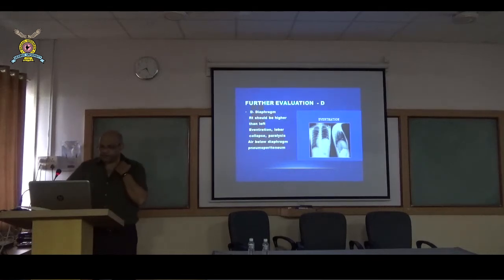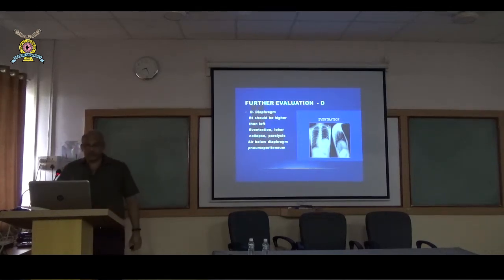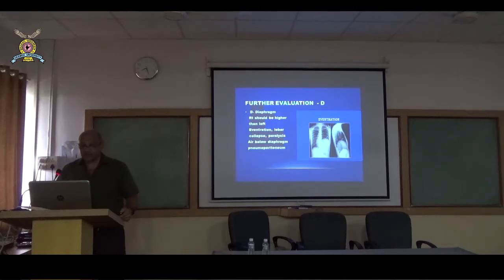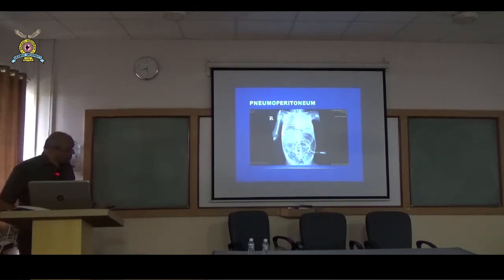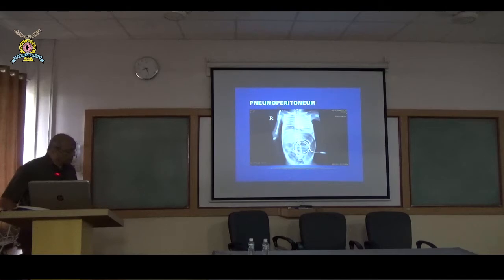Let's go to D — the domes of the diaphragm. The right dome should normally be one intercostal space higher than the left. If not, as in this case where the left dome is very much higher, this is due to eventration. Other causes like lobar collapse or diaphragmatic paralysis need to be considered in the differential diagnosis. In another X-ray, below the dome of the diaphragm on either side there is air — this is a pneumoperitoneum, very clearly visible under both domes of the diaphragm.